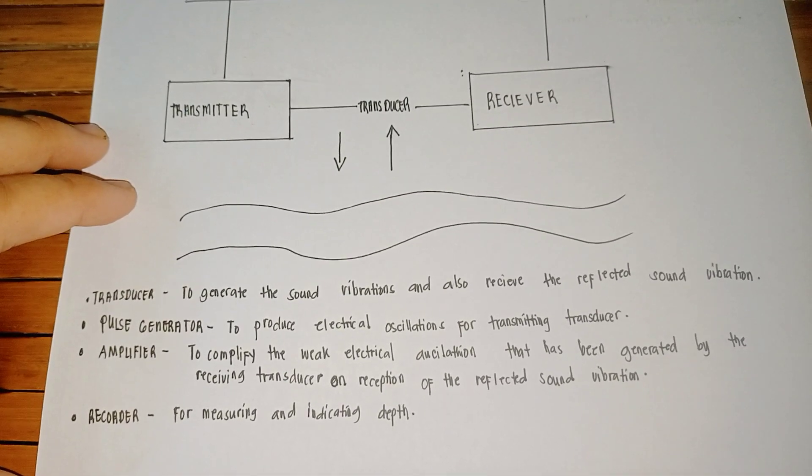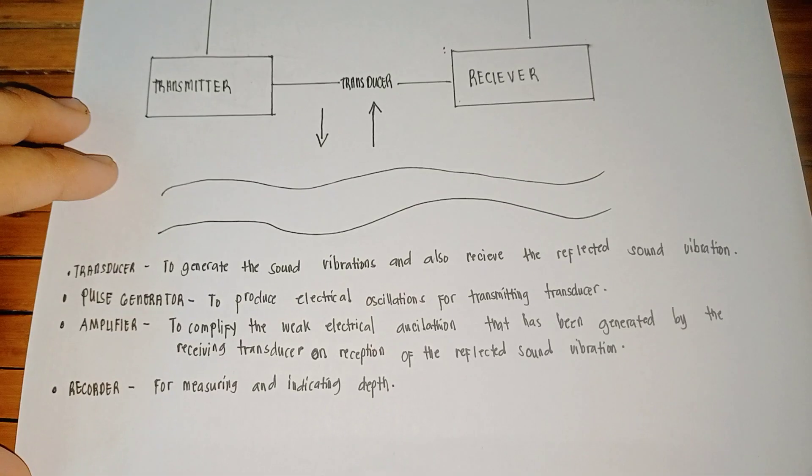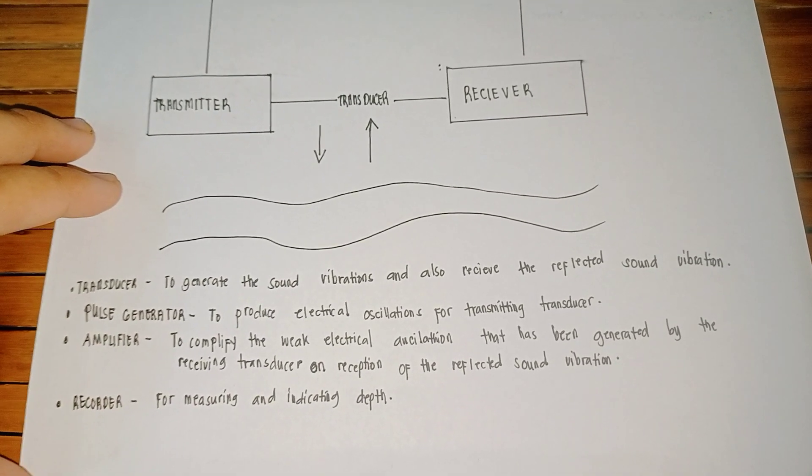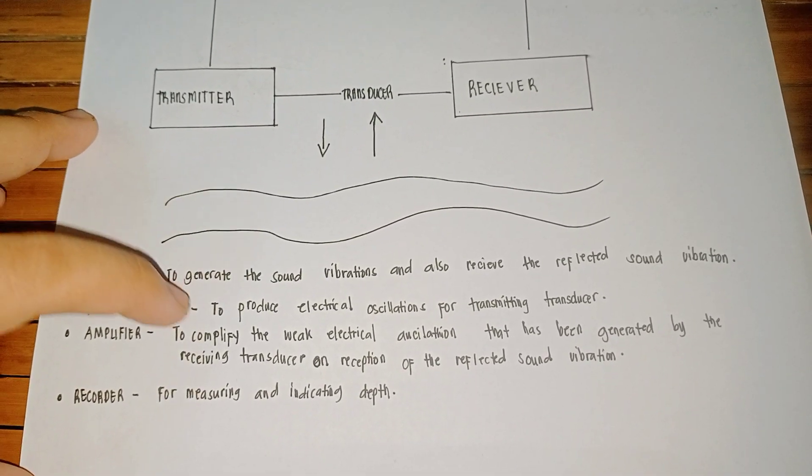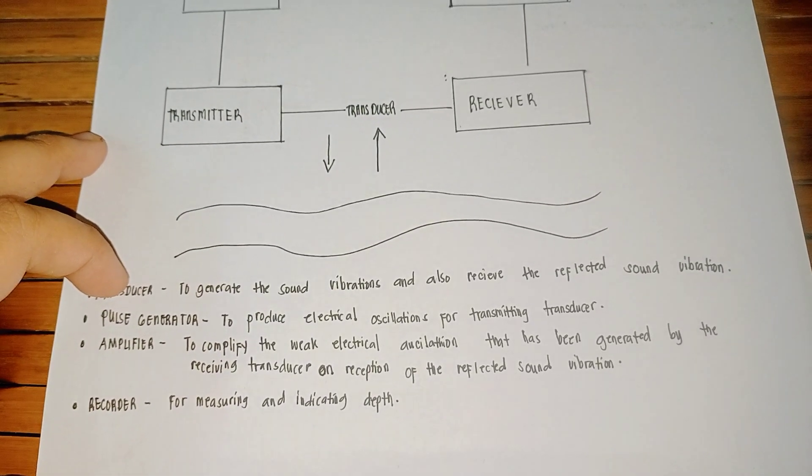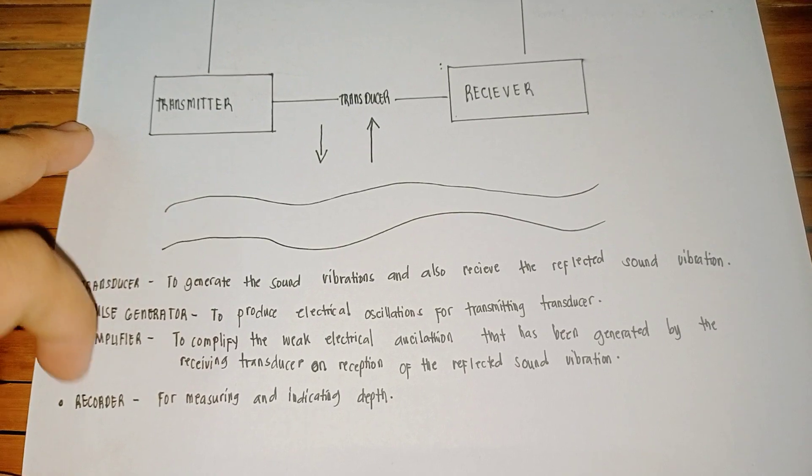The transducer generates the sound vibration and also receives the reflected sound vibration. The pulse generator produces electrical oscillation for the transmitting transducer.